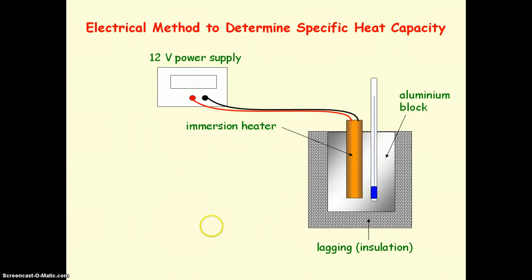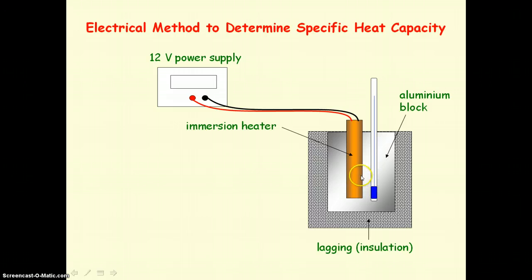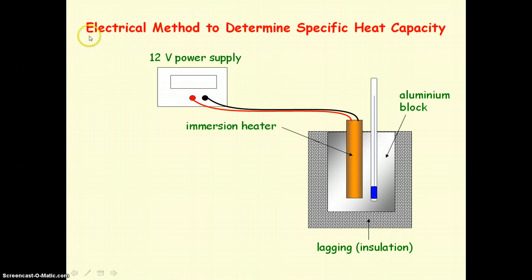You need to know an electrical method to determine the specific heat capacity of a substance. In this example, we're heating an aluminium block. We have a thermometer to measure the temperature change and an immersion heater connected to a 12 volt power supply. Lagging insulation surrounds the aluminium block to minimise heat loss to the surroundings. The energy transformation is from electrical energy to heat energy.